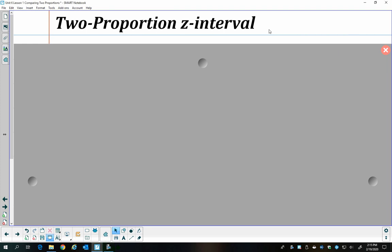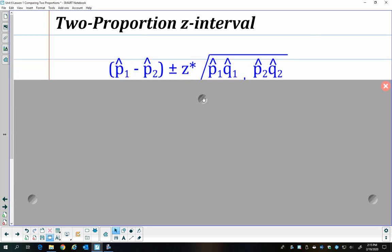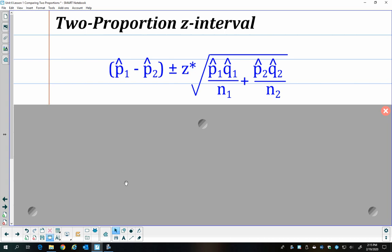So now we can actually start building the interval. And before, our interval was our sample proportion p-hat plus or minus some critical value z-star times the standard deviation. And so it's going to be the same idea, but it's going to be a little modified because we have two different proportions.